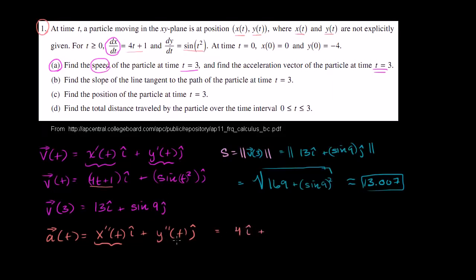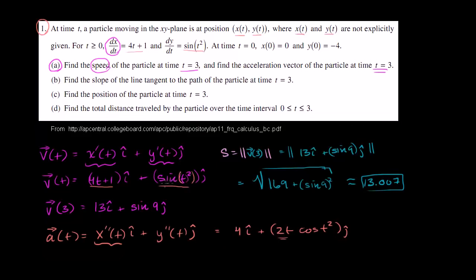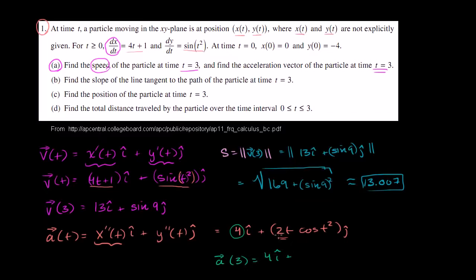The second derivative of y with respect to t is just the derivative of the first derivative, sine of t squared. Using the chain rule, the derivative of t squared with respect to t is 2t, and the derivative of sine of t squared with respect to t squared is cosine of t squared. So we get 2t times cosine of t squared times j. At t equals 3, the acceleration vector is 4i plus 2 times 3, which is 6 times cosine of 9j.